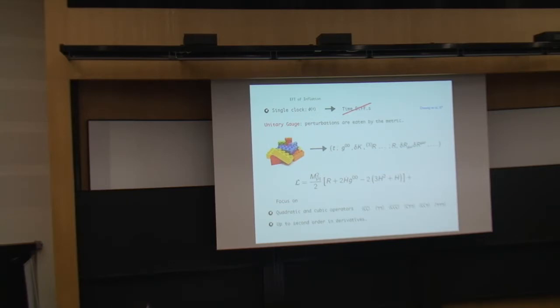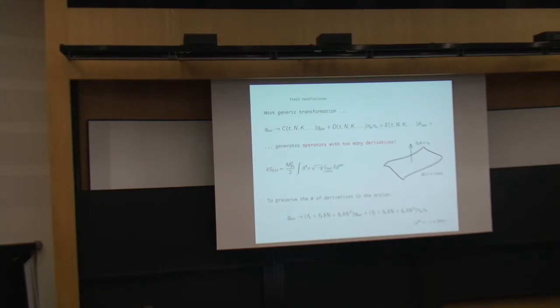Now one can ask, what is the most general redefinition that one can do? And in principle, this can be very complicated, because we have a lot of tools at our disposal. We can, for example, consider adding to the metric some tensor product of the normal to the surfaces of constant inflaton. And this is a disformal transformation. But we can imagine adding other terms, like for example, the extrinsic curvature and so on.